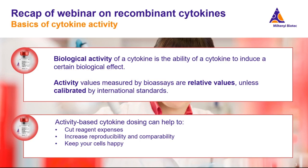What is really important is that these activity values, which are measured via bioassays, are only relative values — meaning you cannot really compare them to one another unless they have been calibrated by international standards. Only if you have cytokines whose specific activity has been calibrated in such a way can you use the advantages of activity-based cytokine dosing: cutting reagent expenses by avoiding overdosing, increasing reproducibility and comparability in your assays, and keeping your cells happy.